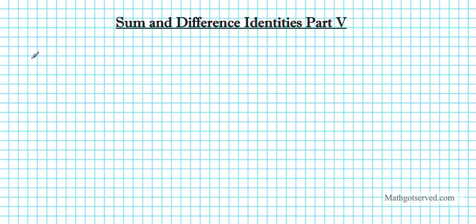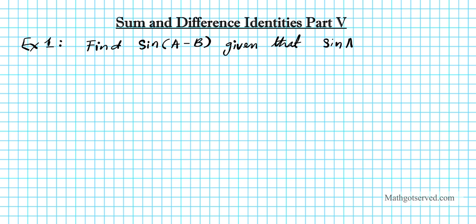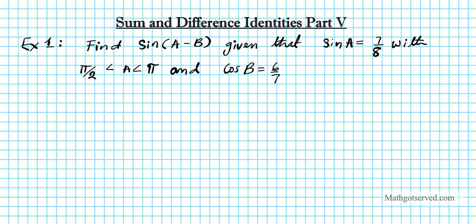Example 1. Find sine A minus B given that sine A equals 7 over 8 with pi over 2 less than A and A less than pi, and cosine B equals 6 over 7 with negative pi over 2 less than B and B less than 0.